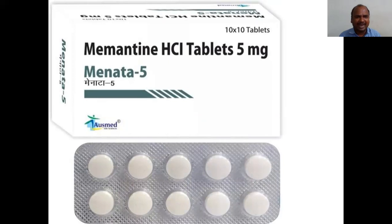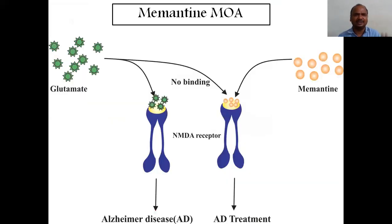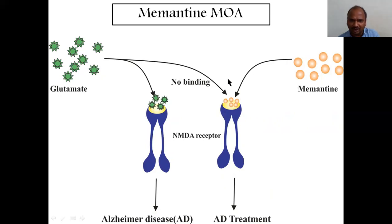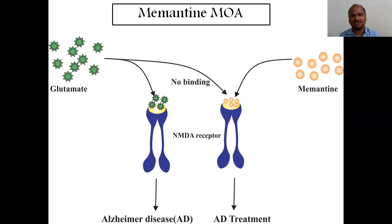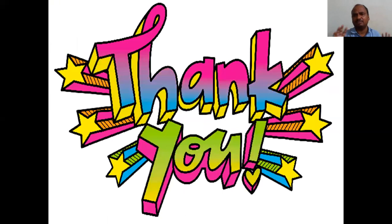The fourth drug is Memantine, shown here as a tablet. Normally, glutamate goes and binds with the NMDA receptor, which leads to Alzheimer's neurodegeneration. When you give Memantine, it goes and blocks the NMDA receptor. Now glutamate cannot bind because Memantine is already occupying the receptor — so there is no place for glutamate. This is the Alzheimer's disease treatment with Memantine. It is a blocker of the NMDA receptor. So the first mechanism is acetylcholinesterase inhibition, and this second mechanism is NMDA receptor blockade.